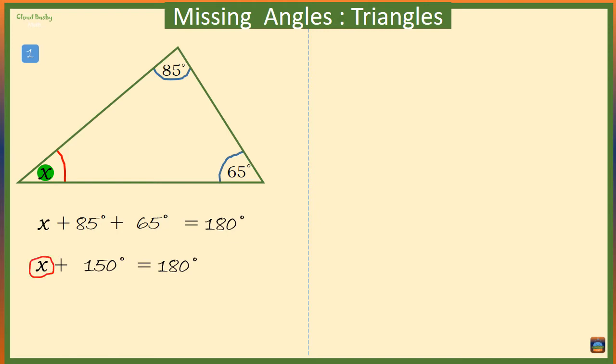We want to solve for x, so let's take 150 to the right hand side. Now we have x is equal to 180 minus 150 degrees, which is 30 degrees. That means the angle marked x is equal to 30 degrees.